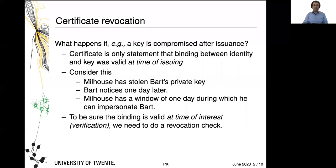What am I talking about? Think about the following. What happens if you issue a certificate and the private key that belongs to it is compromised at some point in time after the certificate has been issued? The certificate at the time of issuance is just a statement that the binding between the identity and the key is valid at that time. A simplified example: let's assume Milhouse has stolen Bart's private key and Bart notices a day later. That means for an entire day, Milhouse has a window of attack during which he can impersonate Bart.